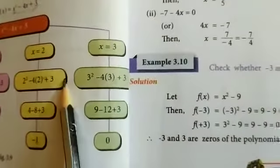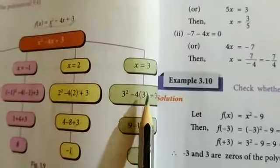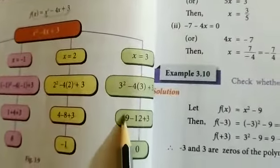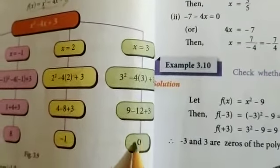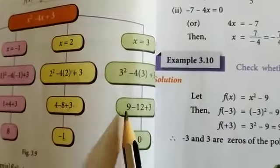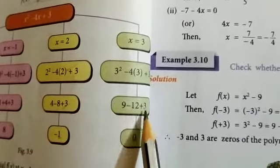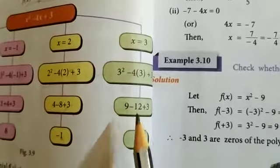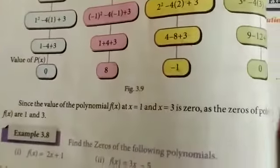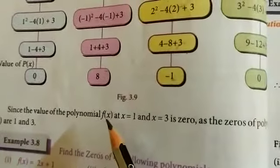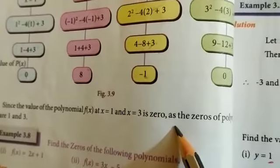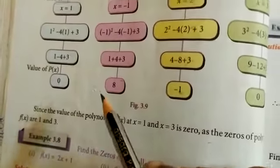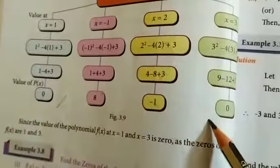Next, substituting x equal to 3: f of 3 equal to 3 squared minus 4 into 3 plus 3. So 3 squared means 9, minus 4 threes are 12, minus 12, plus 3. So 9 plus 3 is 12, and plus 12 minus 12 equals 0. Since the value of the polynomial f of x at x equal to 1 and x equal to 3 is 0, the zeros of polynomial f of x are 1 and 3.